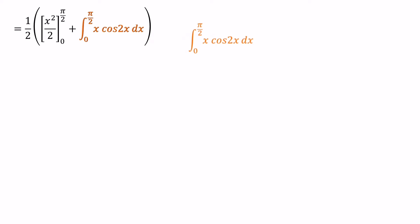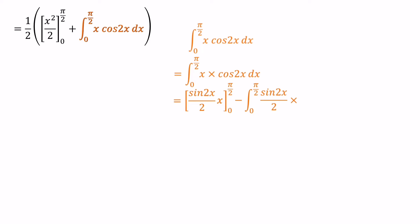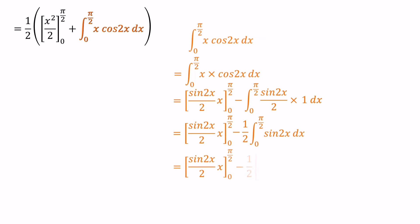The integral of cos 2x value we can write as sin 2x over 2. Then we can write the simple x term as it is, minus integral of sin 2x over 2 times the differentiation of x. The differentiation of x equals 1. The denominator value 2 is a constant, so we can bring this 2 value outside of the integral. Then we need to get the integral of sin 2x, which we can write as minus cos 2x over 2.